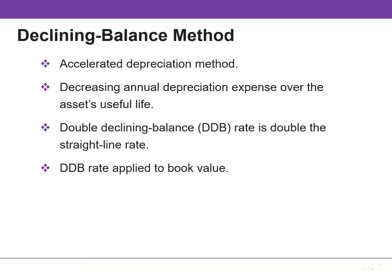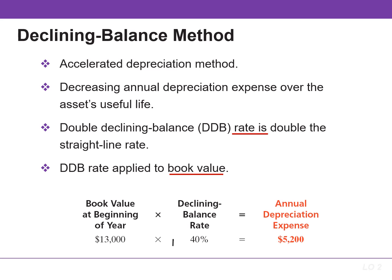The declining balance approach can be applied at different rates. The main method is the double declining balance, which uses a rate that is double or twice the straight-line rate. The rate is applied to the book value, so the formula for double declining depreciation is the book value at the beginning of the year times the rate.